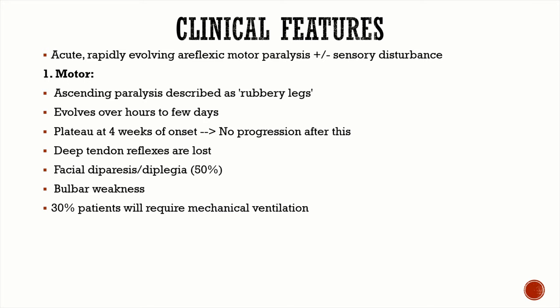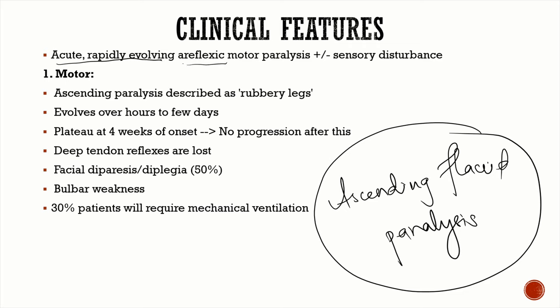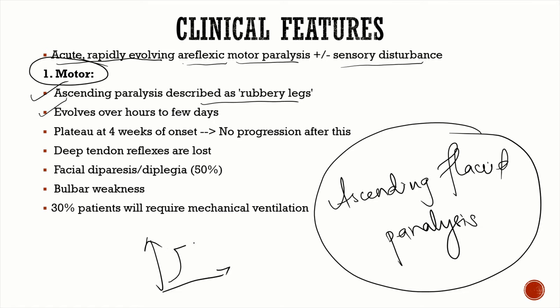The classical description of GBS is ascending flaccid paralysis — an acute, rapidly evolving, areflexic motor paralysis which may or may not have sensory features. Classically described by patients as 'rubbery legs,' progression is very fast, evolving over hours to a few days. By four weeks, the disease reaches a plateau with no further progression. Deep tendon reflexes are lost.